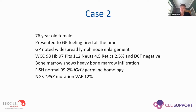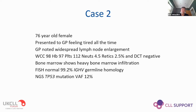Moving to the real world, away from young fit patients: a 76-year-old female I saw relatively recently. She presented to her GP multiple times feeling tired, had a blood test done, and the GP noticed widespread lymphadenopathy. Her blood count showed she was anaemic and thrombocytopenic. A bone marrow biopsy showed 80-90% marrow infiltration. She had poor prognosis disease - FISH was normal, no 11q or 17p deletion, but she had germline IGHV homology and NGS showed a TP53 mutation.